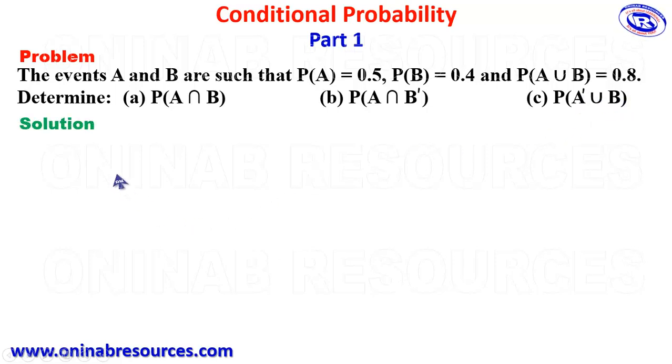In our solution to this problem, we are going to create a relation that combines P of A intersection B, P of A, P of B, and P of A union B. And that relation is P of A intersection B is equal to P of A plus P of B minus P of A union B. So, we then substitute P of A which is 0.5, P of B 0.4, and P of A union B gives 0.8. 0.5 plus 0.4 minus 0.8 gives 0.1.